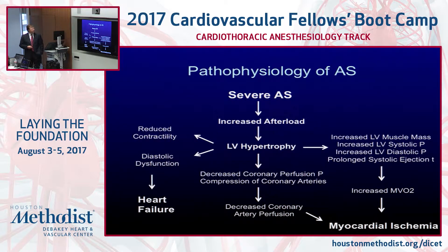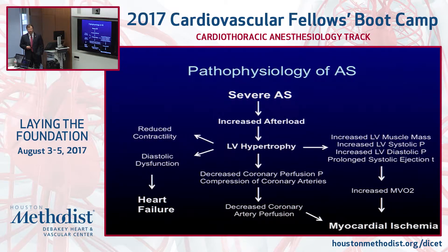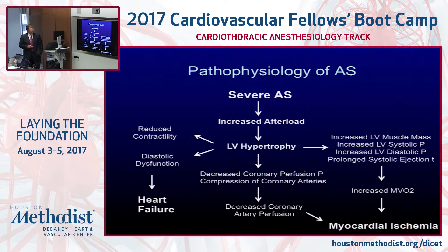With severe AS you're beating against increased afterload — you may have 100 millimeters of mercury peak gradient. The heart is contracting against very high resistance. It's almost like Arnold Schwarzenegger lifting weights and building up his biceps until he can't straighten his elbow anymore — the muscle doesn't relax well. You get LV hypertrophy, which ultimately leads to reduced contractility and diastolic dysfunction because the thick muscle can't relax, leading to heart failure. Increased LV muscle mass also increases systolic pressure.